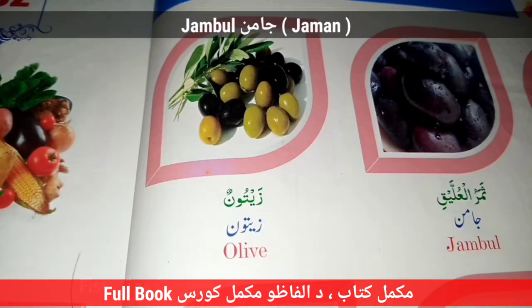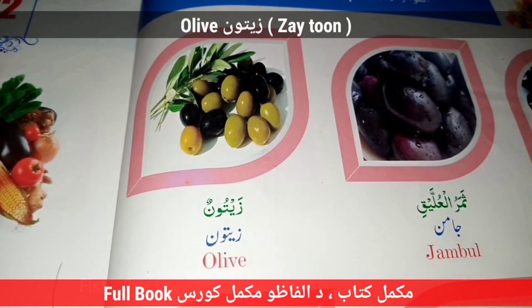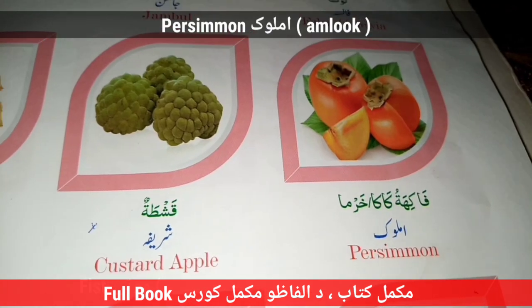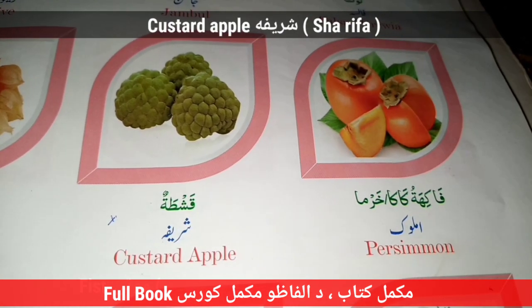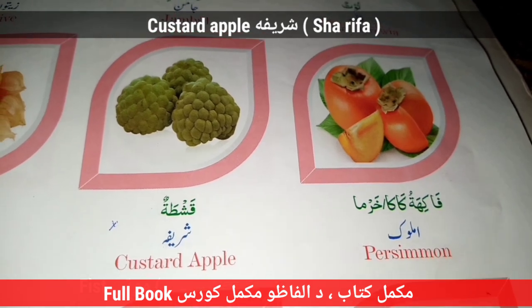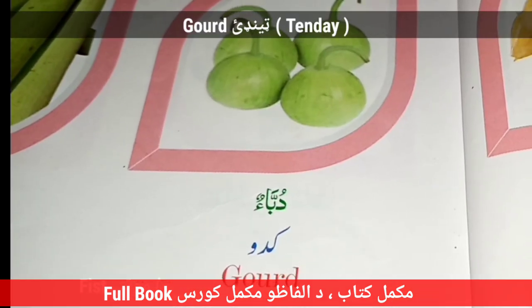Gurgura. Jamble — Jamal. Olive — Zaytun. Persimmon — Amluk. Custard Apple — Sharifa.